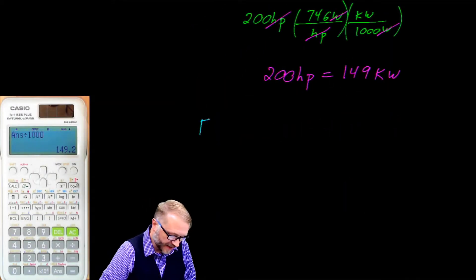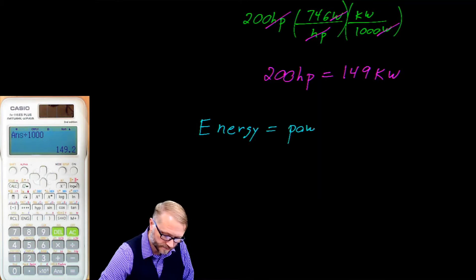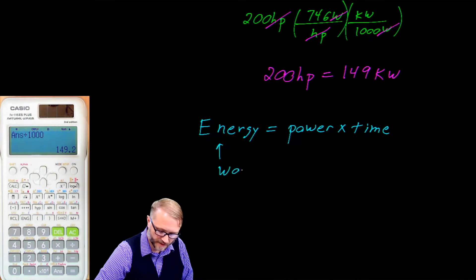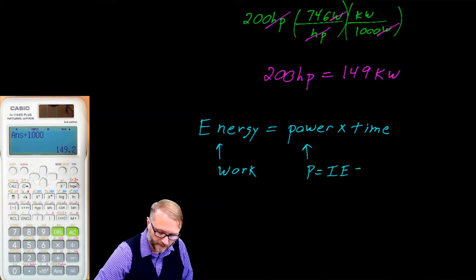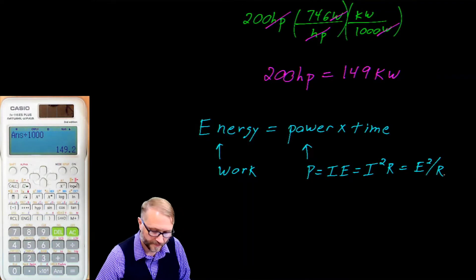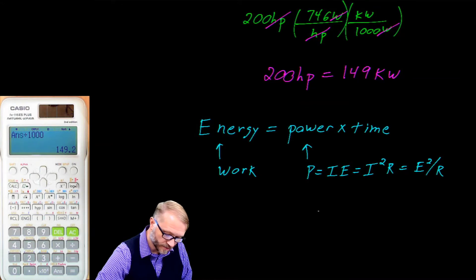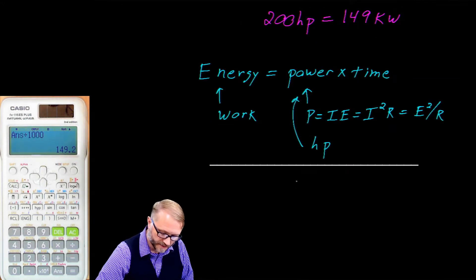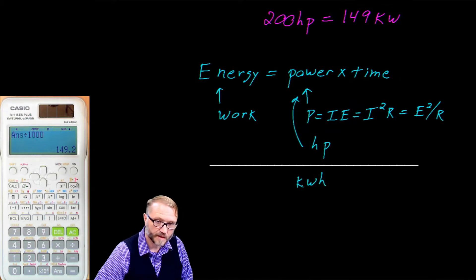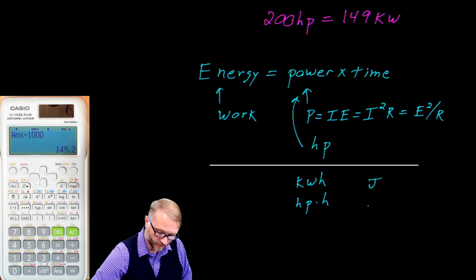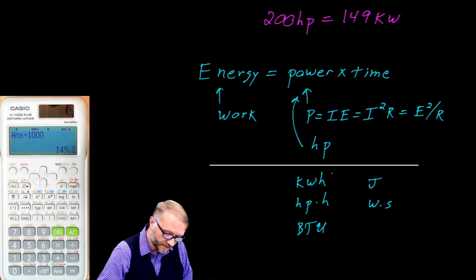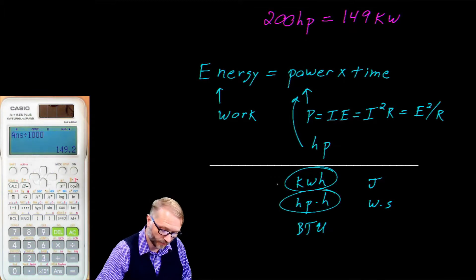Energy is the product of power and time. Energy is the amount of work done, and power we've defined as the product of current and voltage, or I²R, or voltage squared divided by resistance. We could also describe power in horsepower. So when talking about energy, we could use kilowatt-hours, horsepower-hours, joules, watt-seconds, BTUs, or other conversions. For our purposes, we'll focus on the horsepower-hour and the kilowatt-hour.